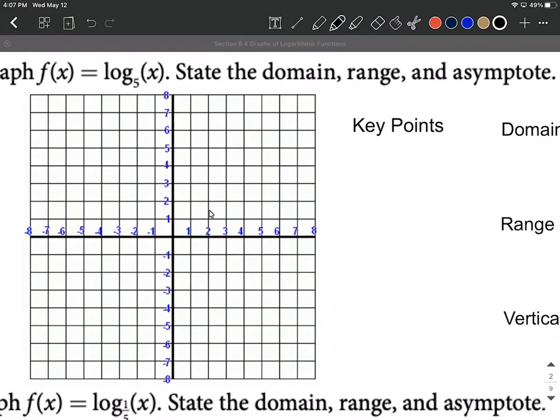The key points on all these logarithmic functions are going to be the base comma 1, and then 1 comma 0. Now why these work out as key points: if we plug in a 5 for our x, we have 5 raised to the first power on the inside. Because logarithmic functions and exponential functions are inverses of one another, we've lined up our bases so we get this nice canceling out with the inverse function property. You're only going to be left with the exponent remaining.